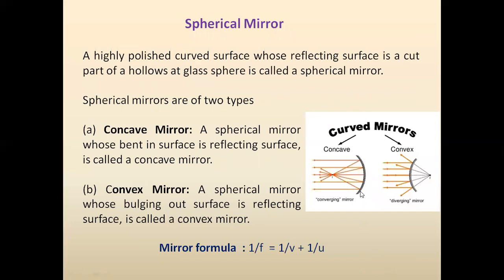There are two types of spherical mirrors: one is the concave mirror and the other is the convex mirror. A spherical mirror whose inner bent surface is the reflecting surface is the concave mirror. A spherical mirror whose outer bulging surface is the reflecting surface is called the convex mirror. So there are two types of mirrors: concave and convex.